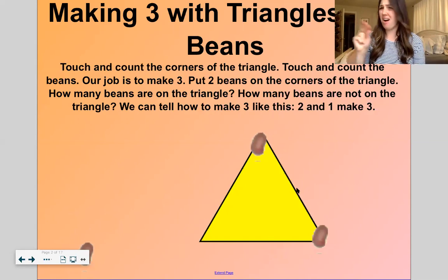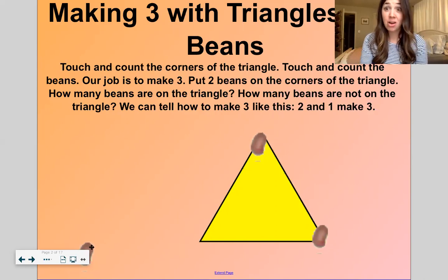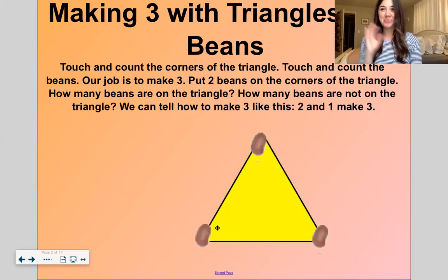How many beans are not on the triangle? Just one. We can tell how to make 3. Like this. Two beans on the triangle. One bean off the triangle. That makes 3. So if I put this one back on, now we have all three. Okay, let's do it another way.